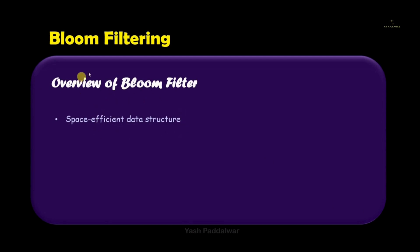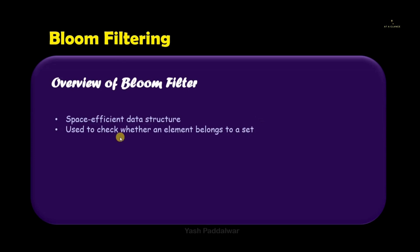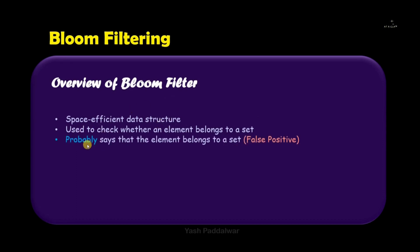A bloom filter is nothing but a space-efficient data structure. The arrangement of elements inside this bloom filter is done in such a manner that makes it space efficient. The specific role of a bloom filter is to check whether a given element belongs to a set or not. So if we have a stream of elements and want to check whether an element belongs to that stream, we can use this bloom filter.